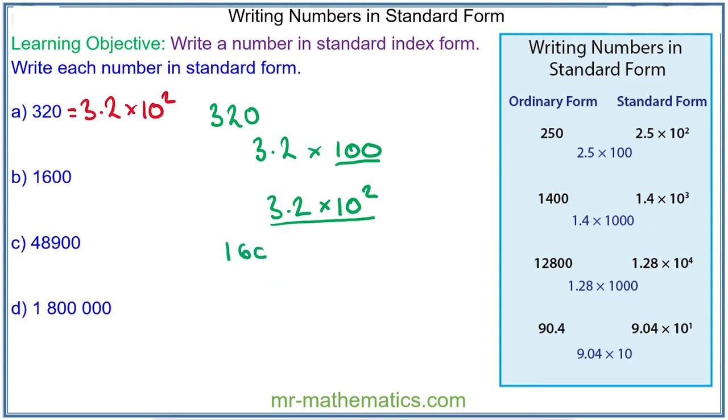1,600. The power of 10 would be 1,000, and it is 1.6 multiplied by 1,000. We can write 1,000 as 10 to the 3. So 1,600 can be written as 1.6 times 10 to the 3.